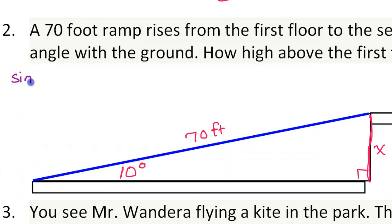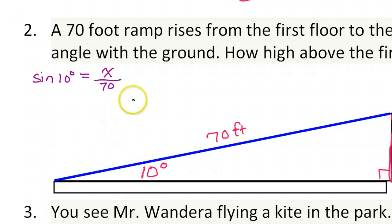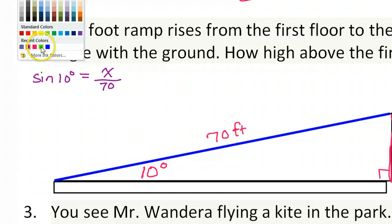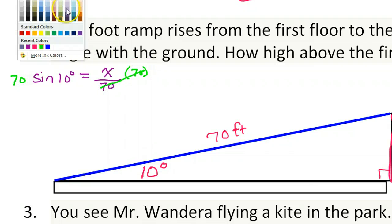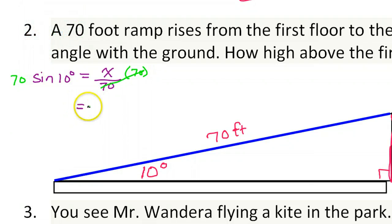So we say sine of 10 degrees. Sine is opposite over hypotenuse, so that's x over 70. And we're solving for x, so we need to multiply both sides by 70. These will cancel out. x equals, so we can just put this in our calculator, 70 sine 10.